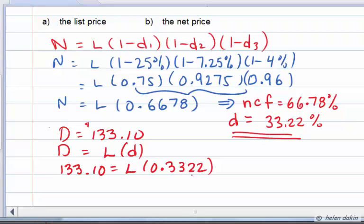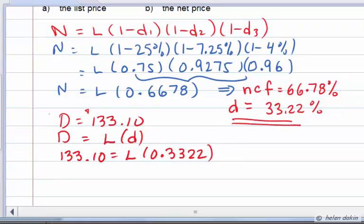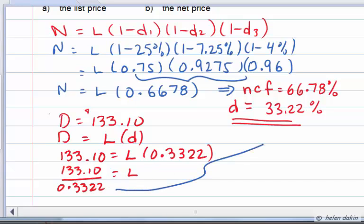All we have to do is divide both sides by 0.3322, ending up with $133.10 divided by 0.3322. This gives us a list price of $400.66.